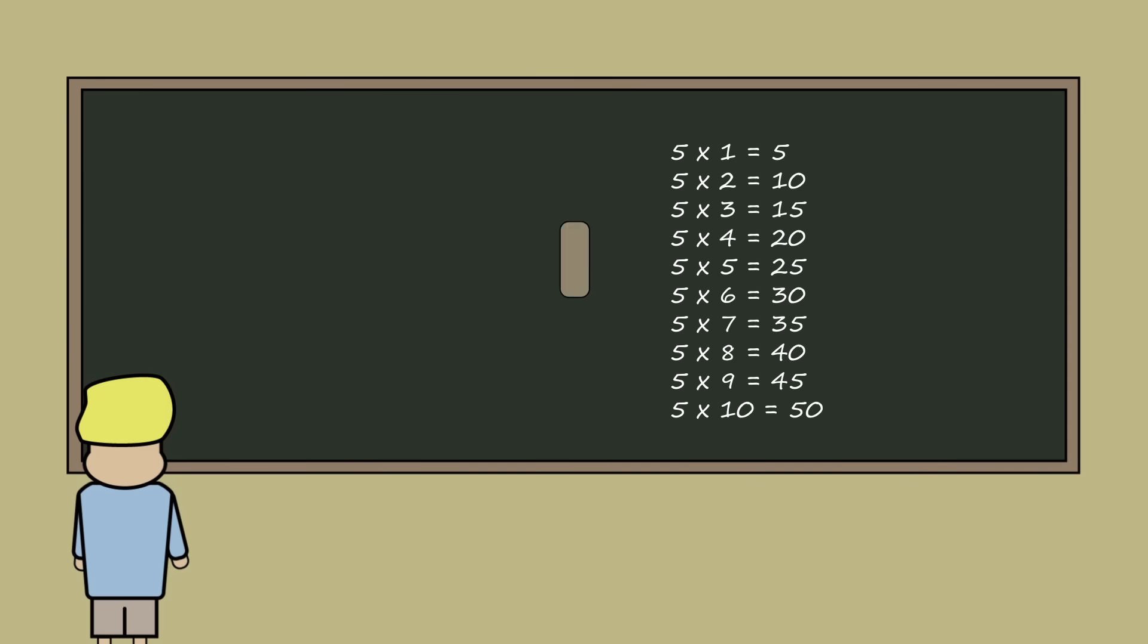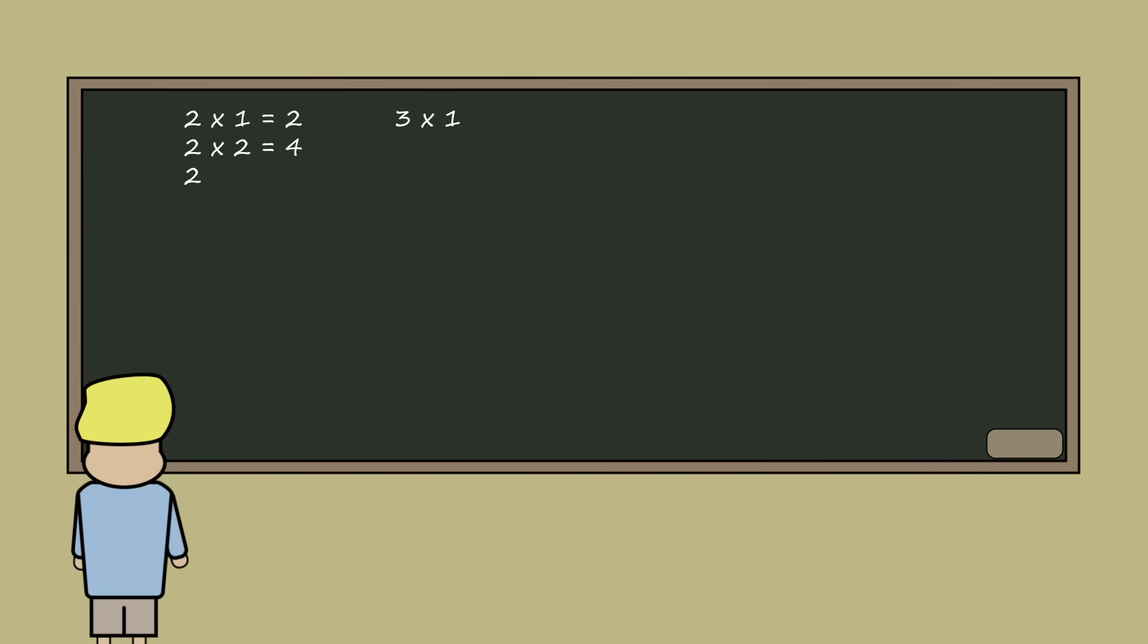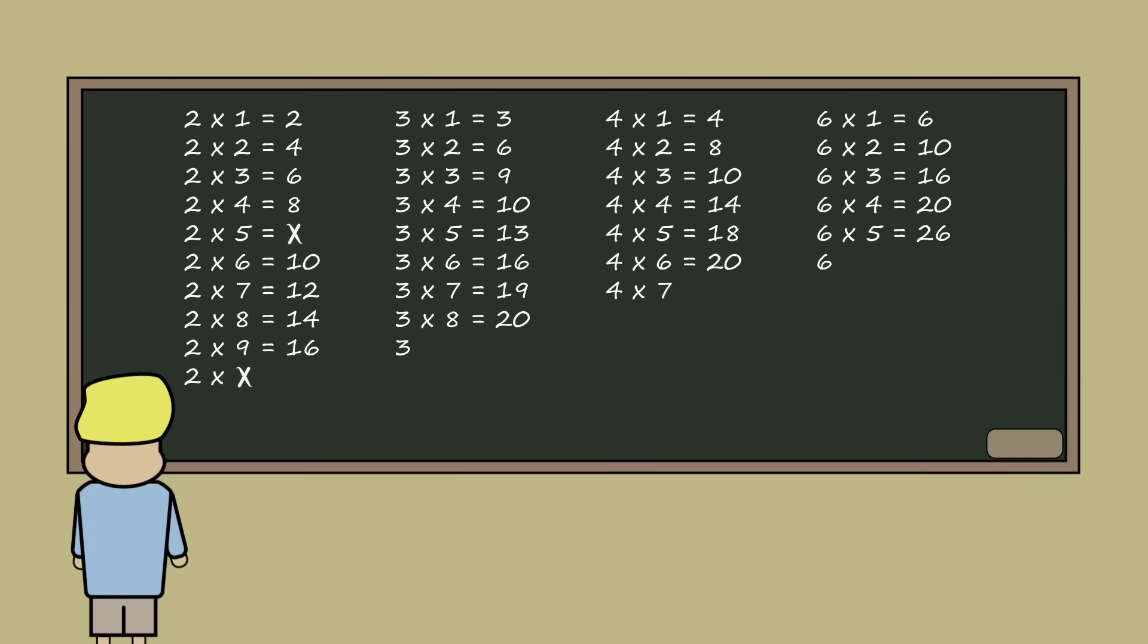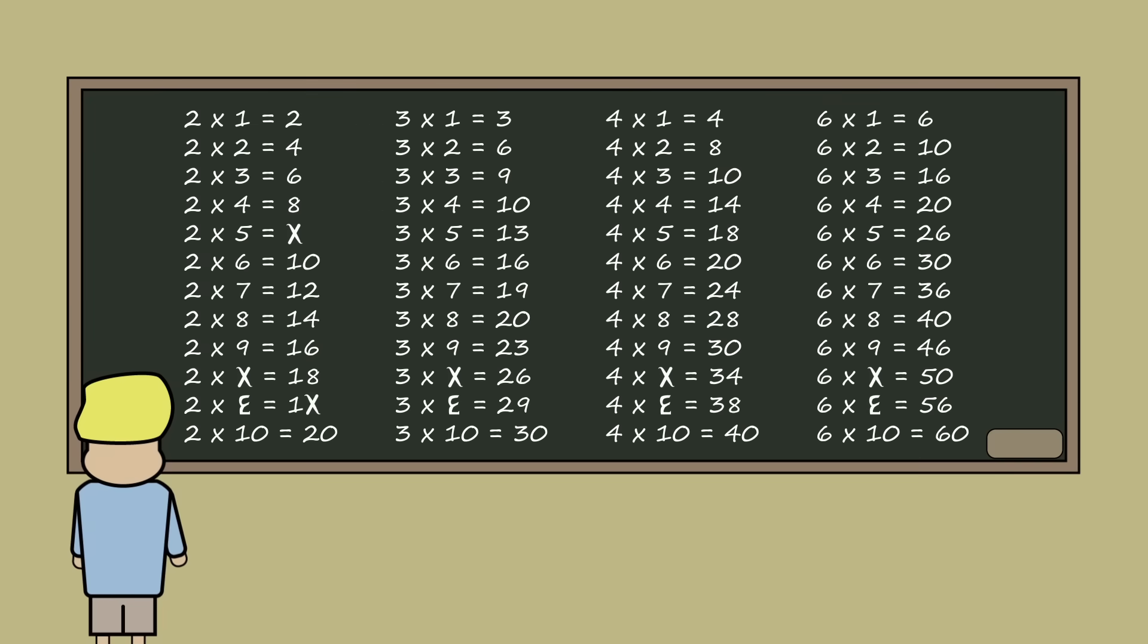In base 12, because 12 can be divided by 2, 3, 4, and 6, there are patterns in all of these times tables, making them much easier to memorize and learn.